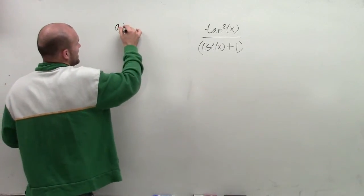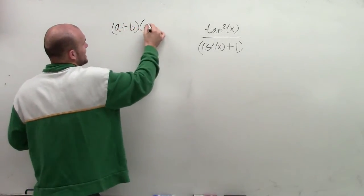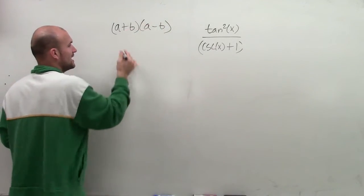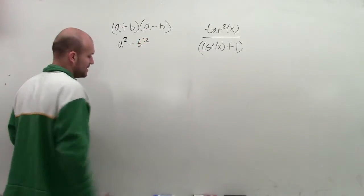And let me explain again. If I have a plus b times its conjugate, which would be a minus b, so you have the same terms, one positive, one negative, what you produce is the difference of two squares.